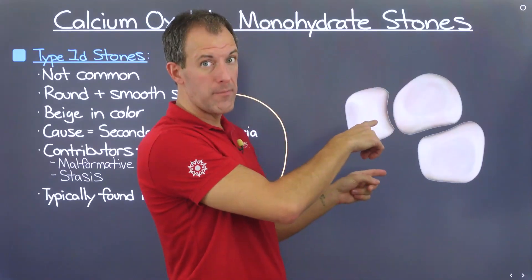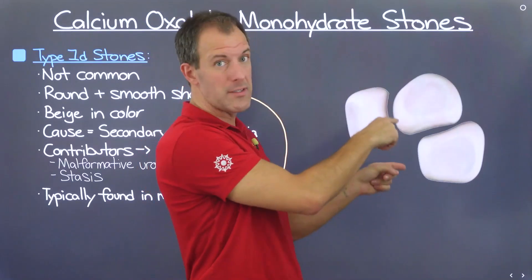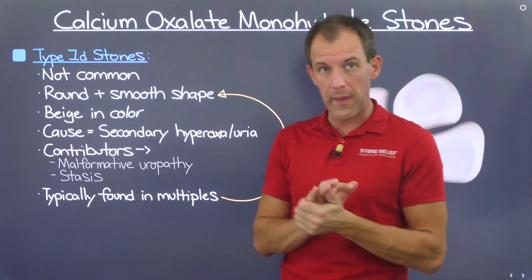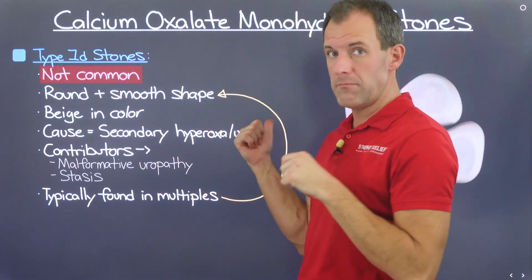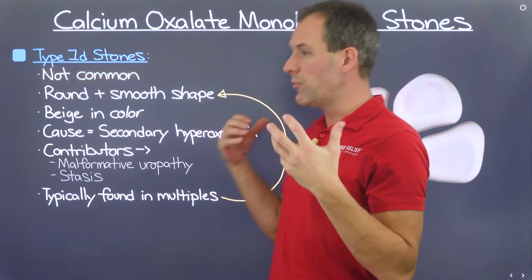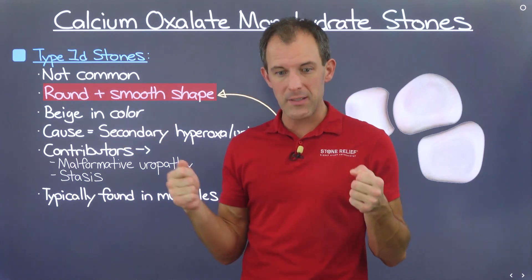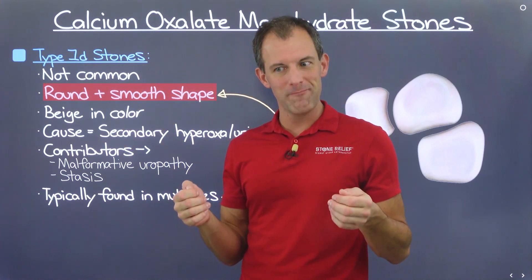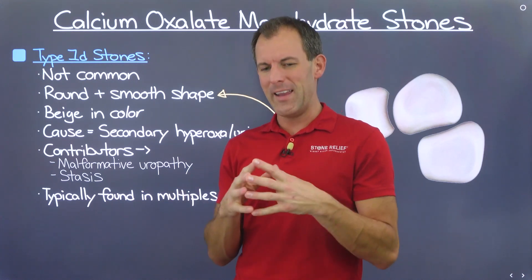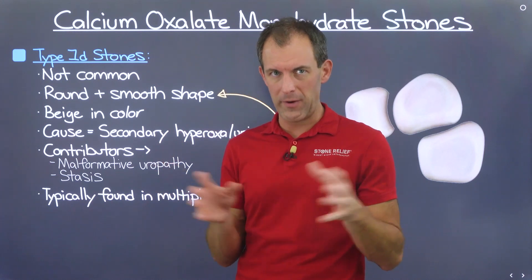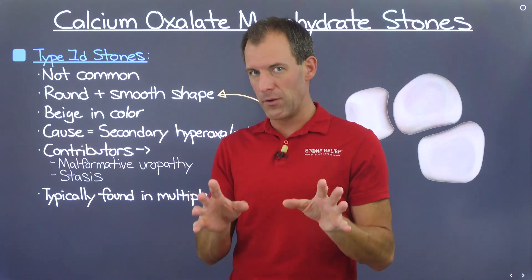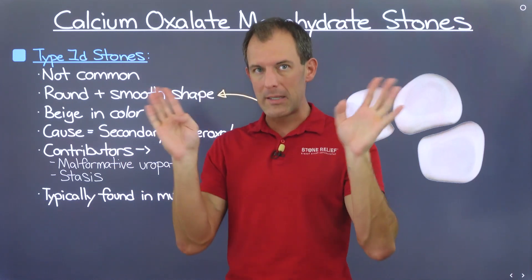Meet the type 1D stone. If you've been paying attention, you'll notice these look a little different from the rest — they're a bit of a black sheep. These are not very common, and they're really defined by a round, smooth shape. Honestly, when you look at them it almost looks like pea gravel — it's that different from the rest of the stones out there, not only in the calcium oxalate family, but all stone types. They're really odd looking and should jump out to you immediately.